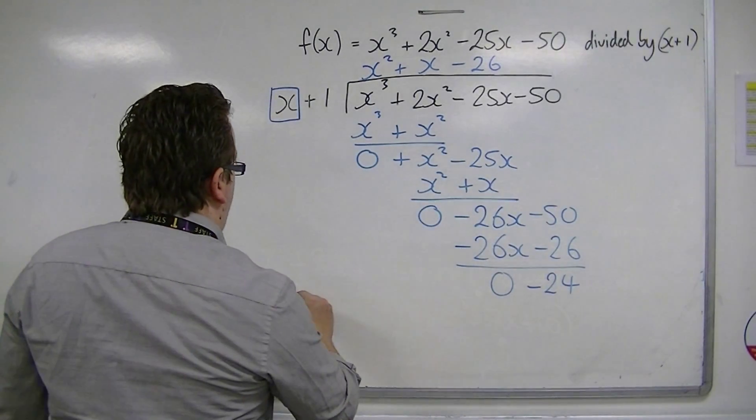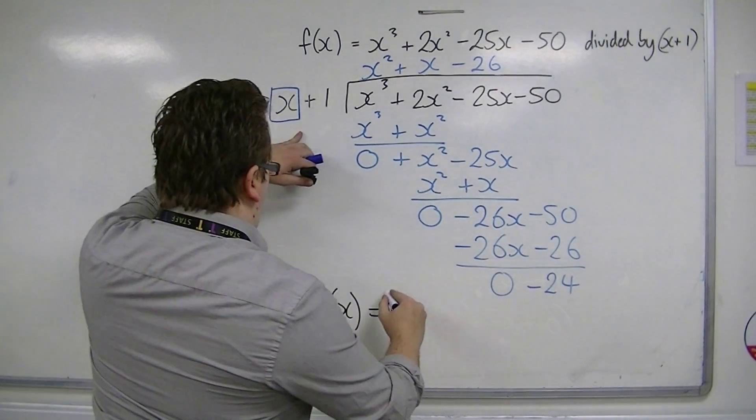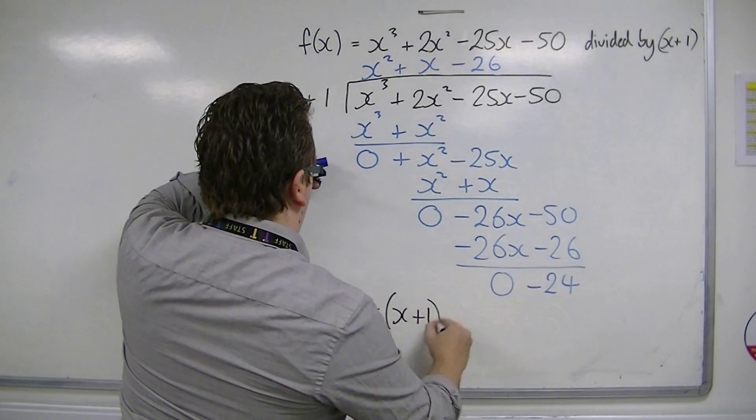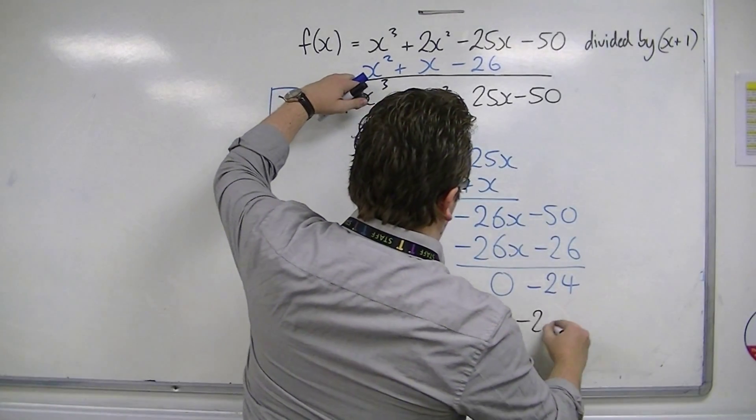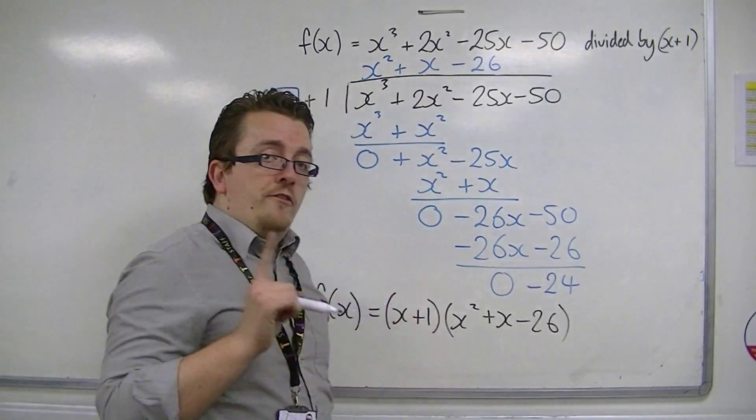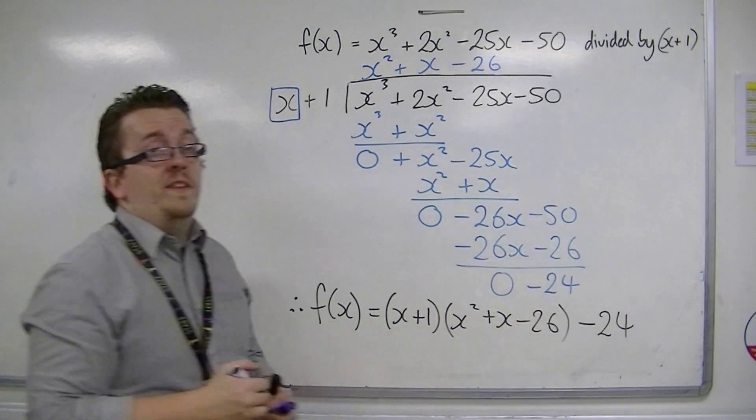You can write the function f of x as x plus 1 times x squared plus x minus 26, but it's not quite factorized because it's got that minus 24 on the outside.